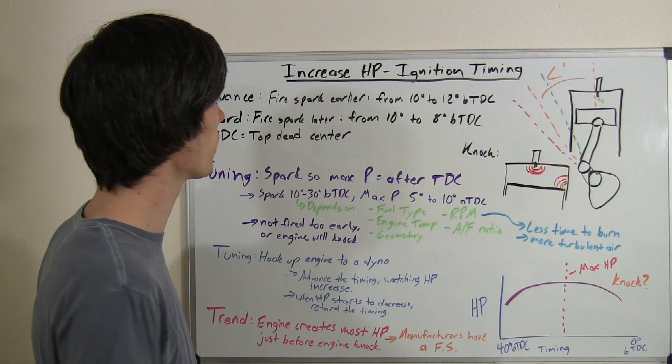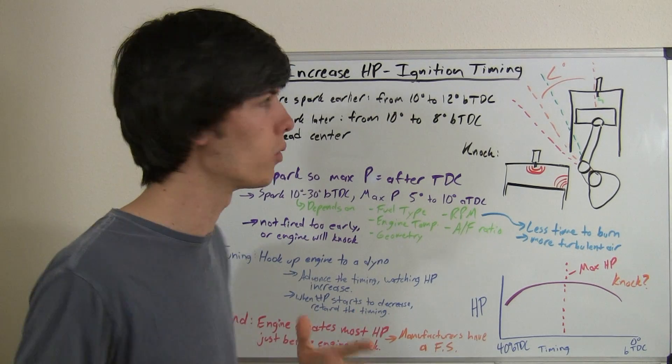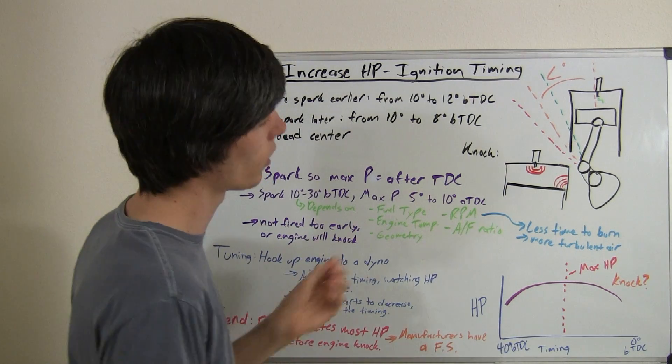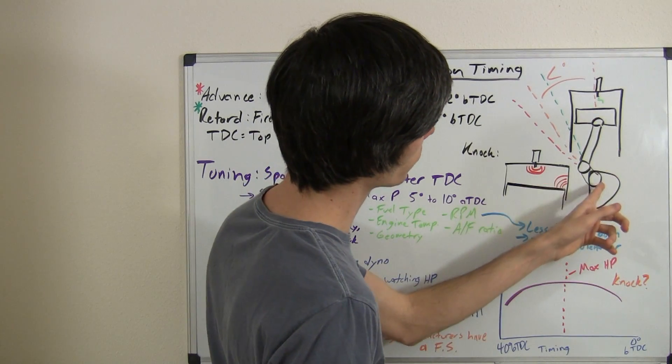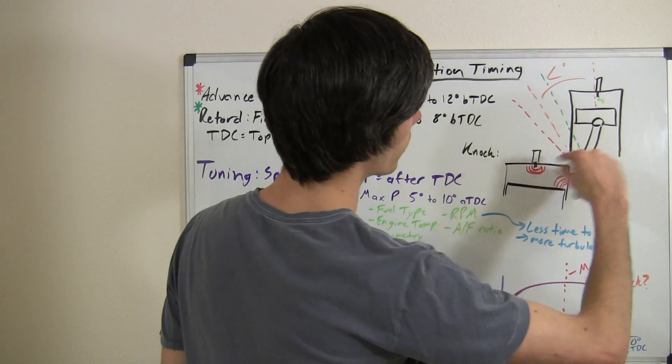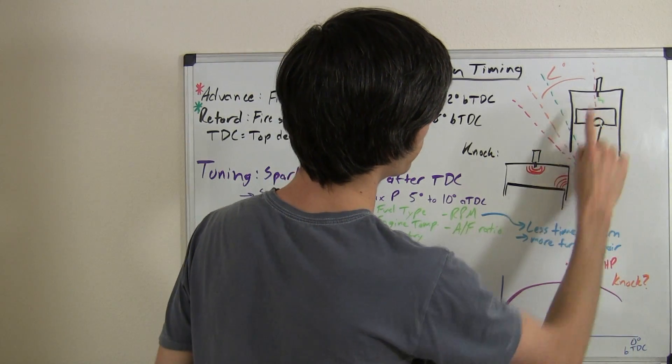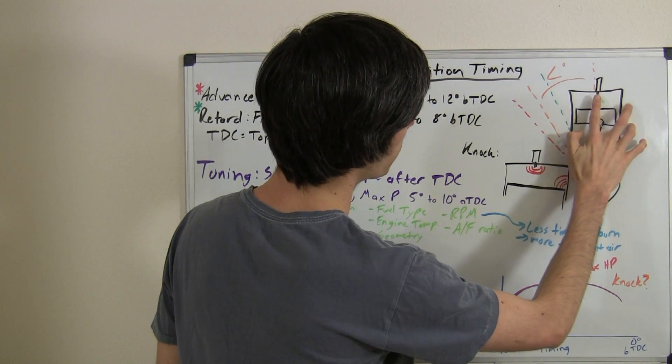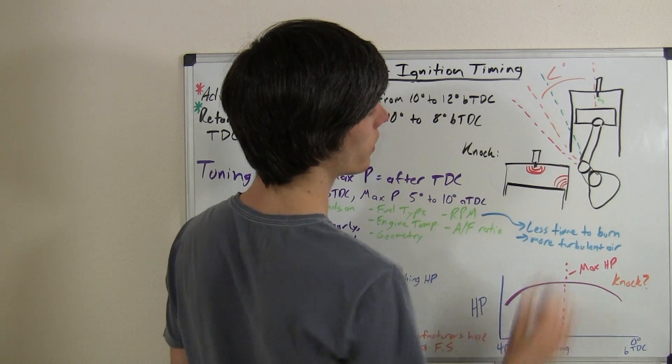Advancing the ignition timing means firing the spark earlier than you would typically. So for example, here we have our cylinder and we've got our crankshaft here, the connecting rod and the piston, and it's going to be rotating. The crankshaft is going to be rotating like this, pushing this piston up. As that piston is pushed up, that's going to be top dead center when the piston is at the very top of the cylinder.